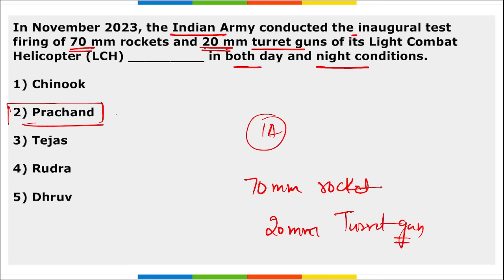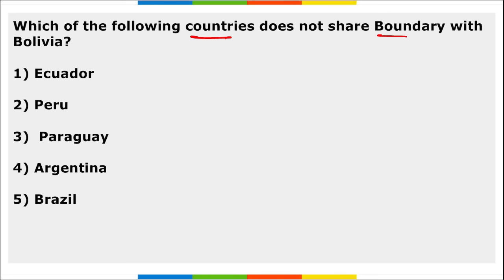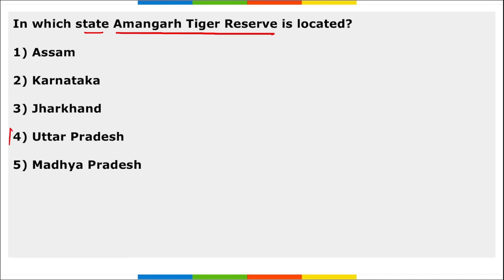Which country does not share a boundary with Bolivia? Ecuador does not share a boundary with Bolivia. Peru, Paraguay, Argentina, and Brazil all share boundaries with Bolivia. In which state is Amangath Tiger Reserve located? It is located in Uttar Pradesh.